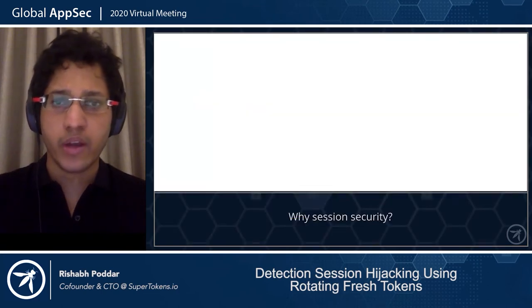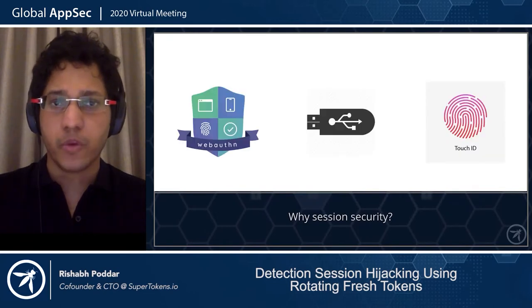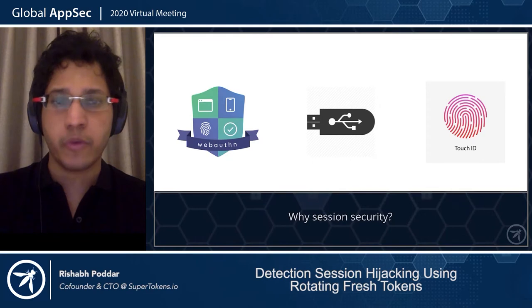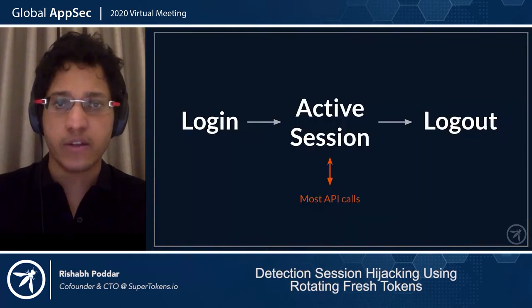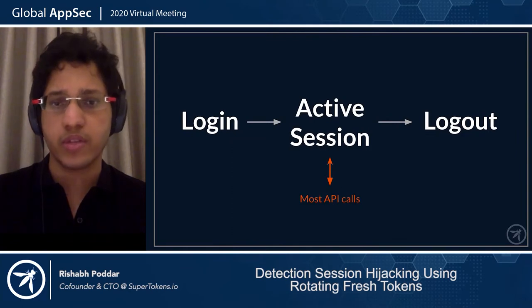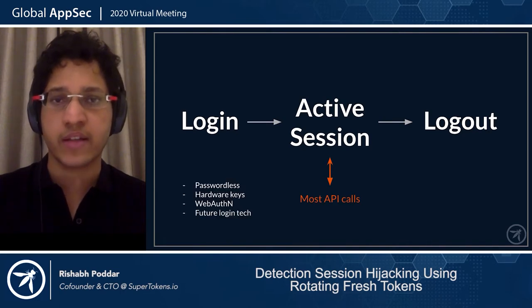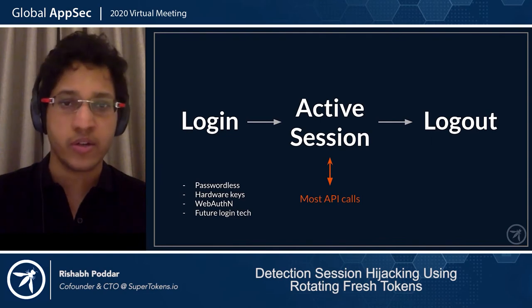So why do we care about session security in the first place? We have great login security that prevents phishing attacks and mitigates the downsides of using passwords. However, if you think about all the possible attack vectors available, just securing login is not enough. The reason is that most APIs use session tokens to identify the user, which means that if these tokens were stolen, they could be used to gain unauthorized access to the account regardless of what login technology is being used.